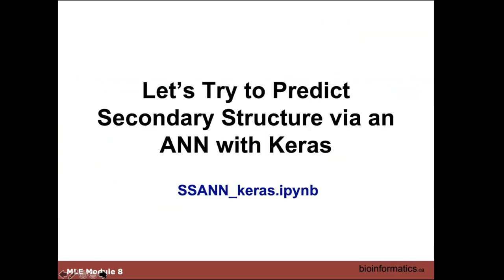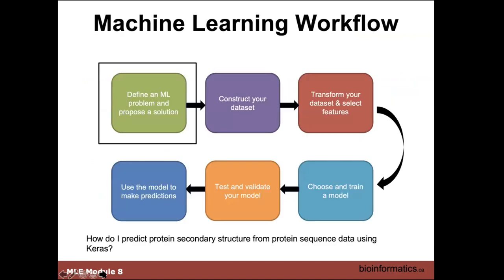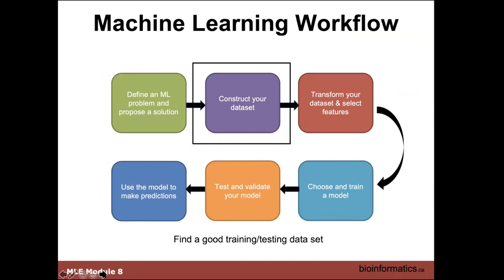In module four yesterday, we looked at secondary structure and used prediction with artificial neural networks. We had a program called SSN, or SAN.IPYNB. Now this is going to be SAN-Keras.IPYNB — this is where we're using Keras. The structure of this is similar to what we did: how do I predict protein secondary structure from sequence data? We're going to use the same training data and testing set that we talked about before — that's the PPT-DB.